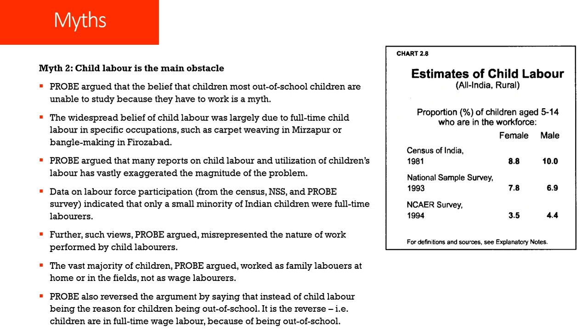PROBE argued that such views misrepresented the nature of work performed by child labourers, because the vast majority worked as family labourers at home or in the fields — not as wage labourers. PROBE also reversed the argument: instead of child labour being the reason for children being out of school, it is actually the reverse — children are in full-time wage labour because of being out of school. Due to the failure of implementing universal elementary education, children are in the workforce — not the other way around.